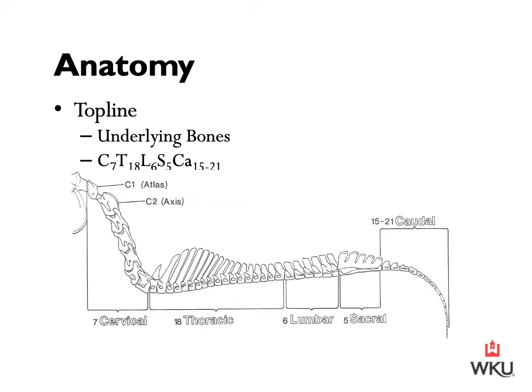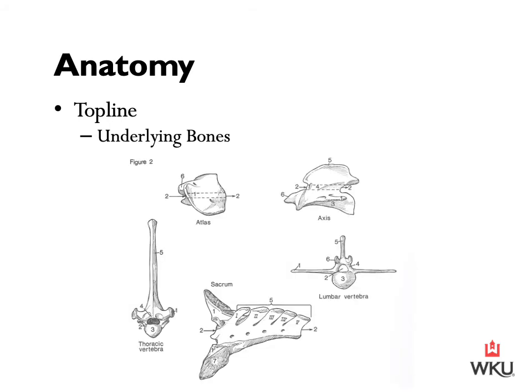Taking a closer look at those different types of vertebrae: in the top left image we have the atlas, and on the right-hand side we have the horse's axis. Then we have the cervical vertebrae — the atlas and axis among five others make up the cervical vertebrae. Then we have the thoracic vertebrae in the bottom left. Then the lumbar vertebrae in the lower right. And bottom center shows the five sacral vertebrae, which are fused to form the sacrum.